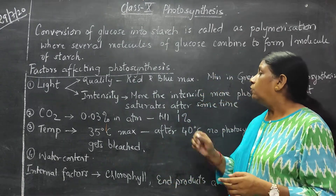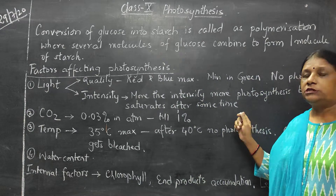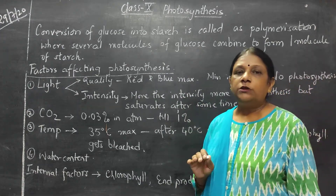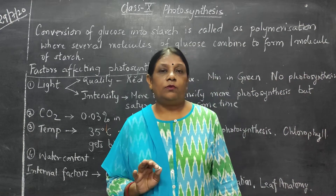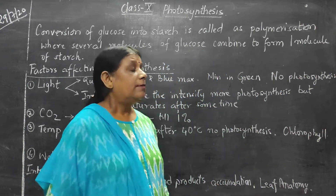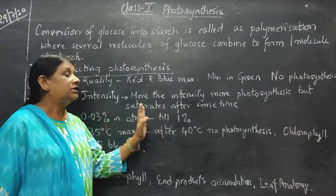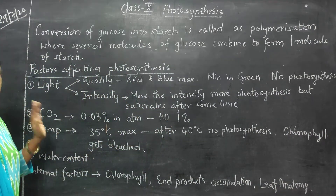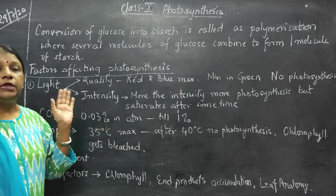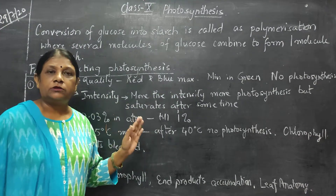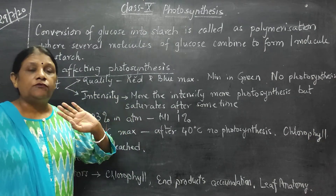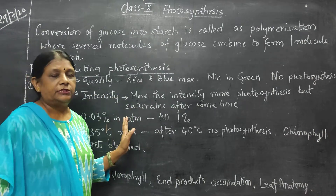So with intensity: more intensity means more photosynthesis, but a saturation point comes where no more photosynthesis will take place. Why? Because the other factors such as carbon dioxide level, temperature and water content should also increase. If they don't increase, then increasing only the intensity of light means no further photosynthesis will take place.